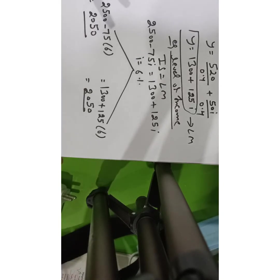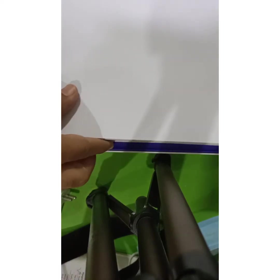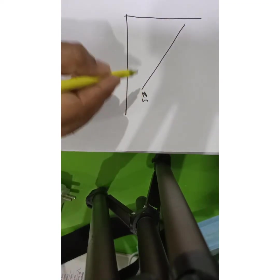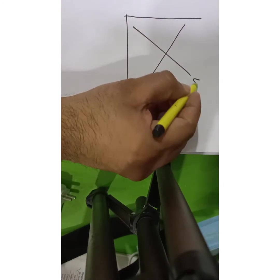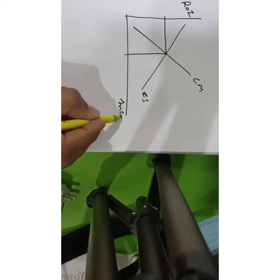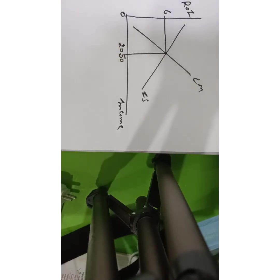Now I will draw a diagram to help understand the concept. IS is downward sloping and LM is upward sloping. On the vertical axis we take the rate of interest, and on the horizontal axis we take income — the equilibrium level of income. Here i equals 6% and equilibrium income equals 2050.